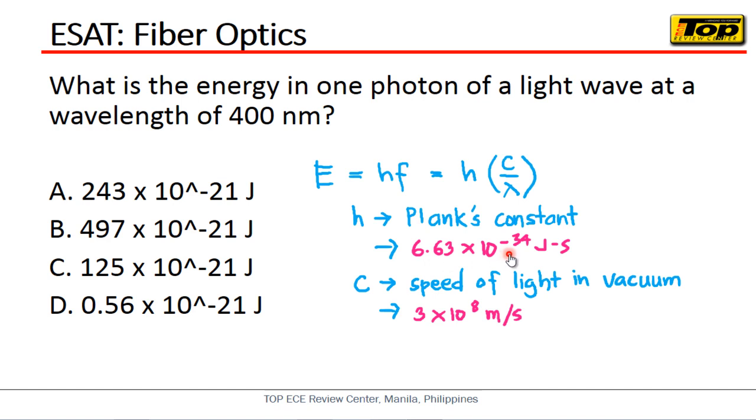Since we're not given the frequency, but in our formula it's frequency, we can express frequency in terms of c over the wavelength. And we know that c, that is the speed of light in vacuum, is approximately 3 times 10 to the 8 meters per second.